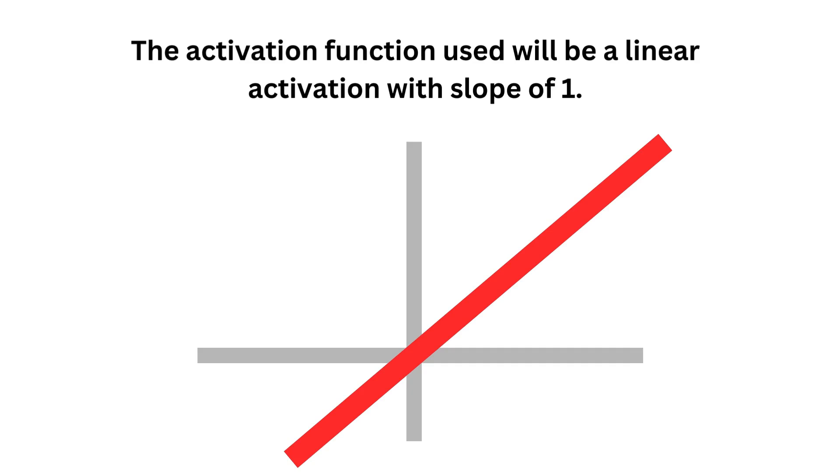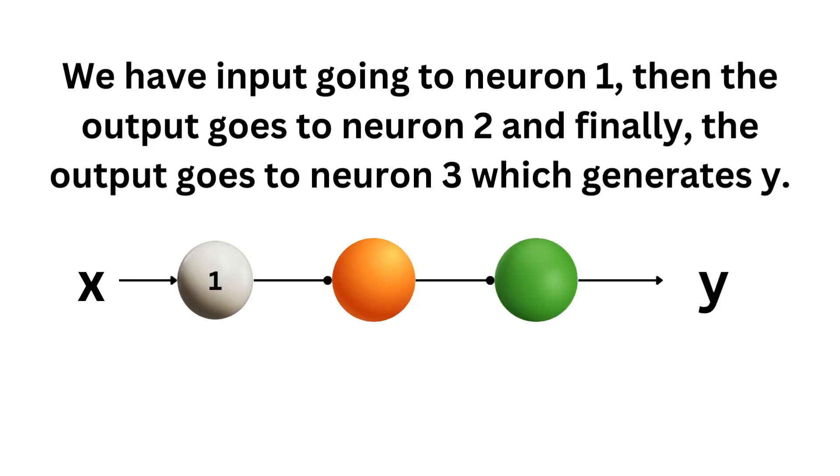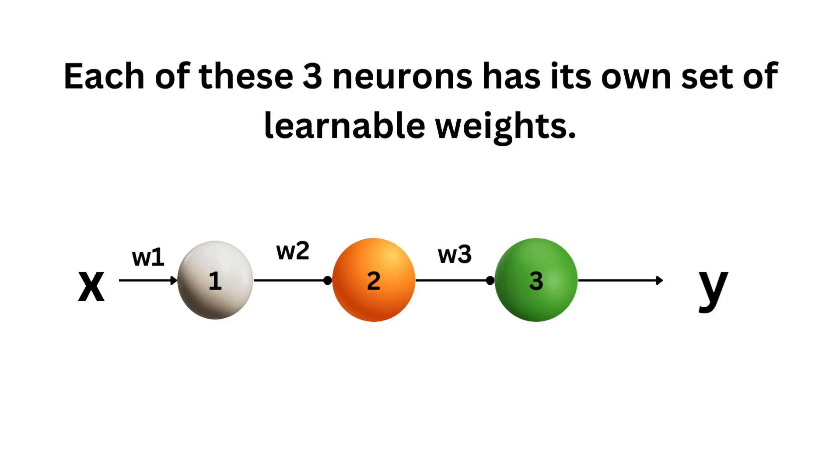The activation function we'll be using here will be a linear activation with slope of 1. So we have input going to neuron 1, then the output goes to neuron 2, and finally the output goes to neuron 3, which generates y. Each of these 3 neurons has its own set of learnable weights.